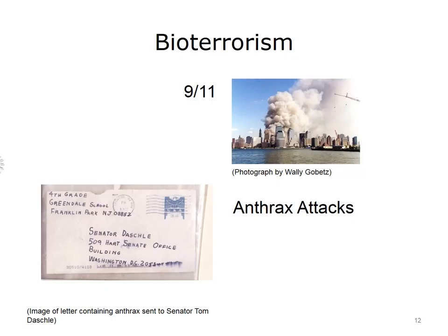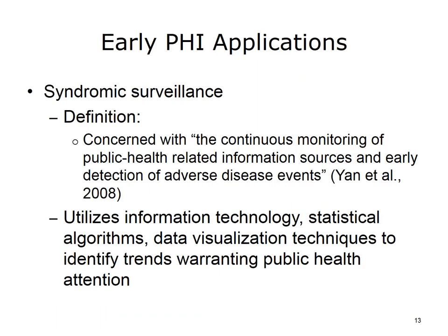A major concern for public health practitioners in the U.S. involved a scenario where a biological weapon causes an outbreak of a silently communicable disease. In such a case, officials wouldn't even know the attack was going on until it was too late. Early PHI applications were designed to monitor health trends so that a sudden spike in certain ailments could be investigated as a possible early warning of a biological attack. Such applications are referred to as syndromic surveillance, defined as the continuous monitoring of public health-related information sources and early detection of adverse disease events. More generally, syndromic surveillance utilizes computer systems, advanced statistical algorithms, and data visualization techniques to identify trends warranting the attention of public health officials.